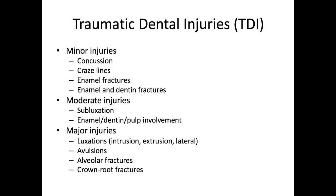Next, we have moderate injuries, which involve subluxations and enamel, dentin, and pulp fractures — fractures that are more complicated and involve the nerve of the tooth. These are our Ellis class 3 and class 4 fractures. Moderate injuries introduce a higher cost, more complex intervention. Typically endodontic treatment is involved, like a partial pulpotomy, a full pulpotomy, or even a pulpectomy.